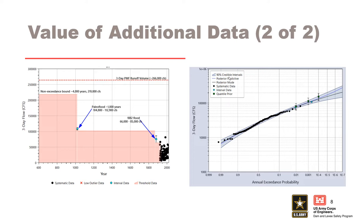Similarly, as we'll see later in this course, including quantile prior estimates based on a precipitation frequency analysis can also add significant value to your frequency curve, increasing the effective record length and reducing the uncertainty in your results.